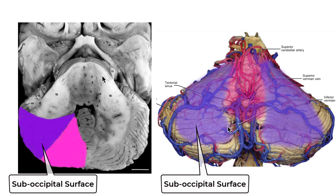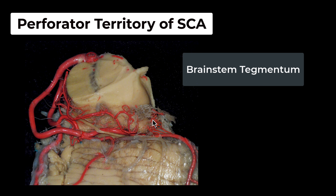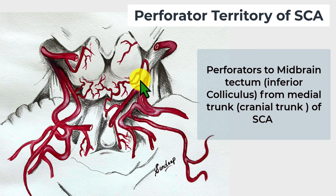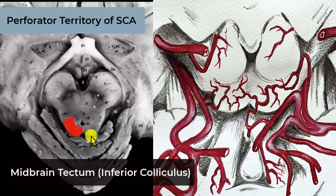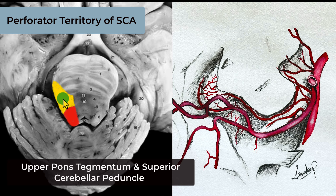At the level of the midpons, we can again see the territory supplied by the superior cerebellar artery. The superior cerebellar artery also gives rise to perforators to the brainstem tegmentum and midbrain tectum, arising from the main trunk as well as its divisions. The inferior colliculus is predominantly supplied by perforators from the medial trunk of the superior cerebellar artery, as shown in the midbrain section. A section through the upper pons displays the perforator territory of the superior cerebellar artery supplying the lateral aspect of the upper pons and the superior cerebellar peduncle.